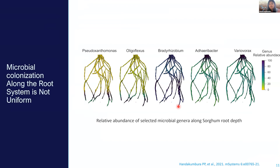This is another example using the same root system. This is an example of microbial abundance — we are mapping five different microbial genera here. You start to see the heterogeneity in the distribution of these microbial genera. Pseudomonas seems to be low abundant at the top of the root, but as you move towards the growing tips it becomes more abundant. Bradyrhizobium seems to be highly abundant and colonizing the whole root system. These are interesting observations we can start to see by preserving this 3D structure in three-dimensional space.